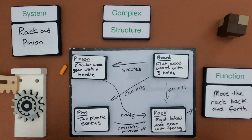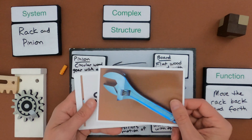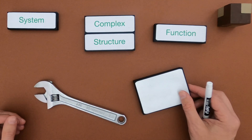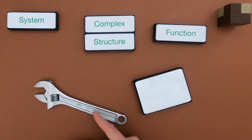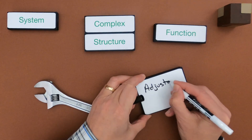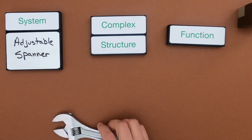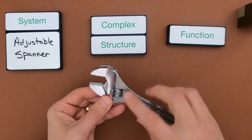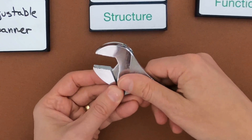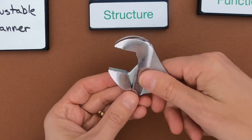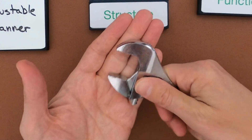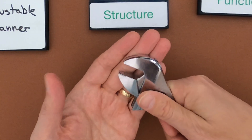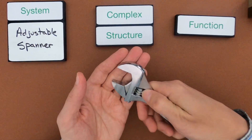Now I'm going to clear this off and then you're going to show me your thinking using a crescent wrench. Now that I've showed you my thinking using complex structures and the rack and pinion, we're going to try to do the same thing using this adjustable spanner. There is a thumb screw here so I can use my thumb to move that screw back and forth. As I move it in one direction the two jaws get closer together, and in the other direction they get farther apart.